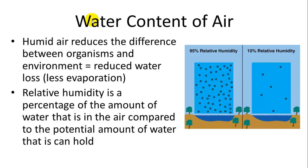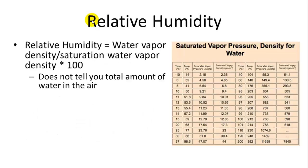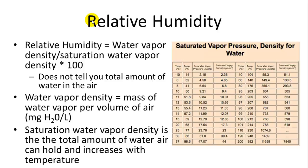And we have a little graph there. 95% relative humidity, almost all of the water that can be held in the air is in the air, whereas at 10% relative humidity, you have hardly any water in the air compared to how much it could hold. So the equation is the water vapor density divided by the saturation water vapor density times 100 will give you that percentage. But it doesn't tell you the total amount of water in the air because relative humidity changes depending on the temperature.